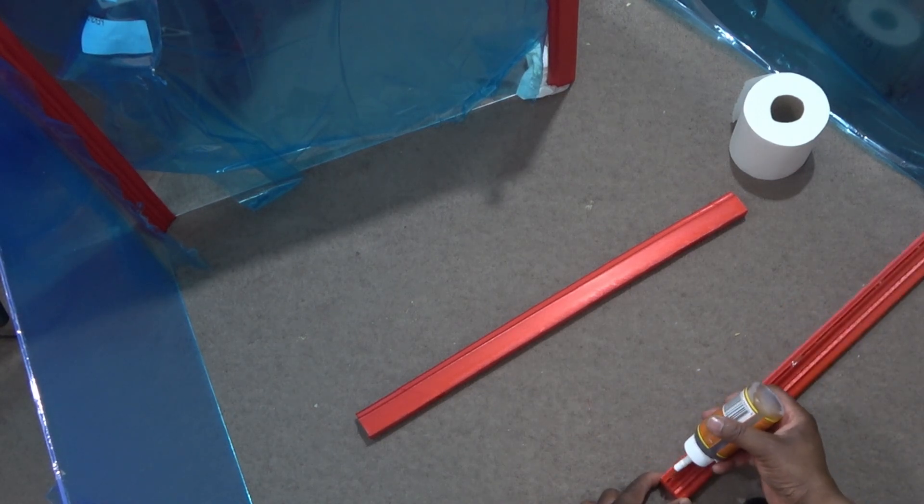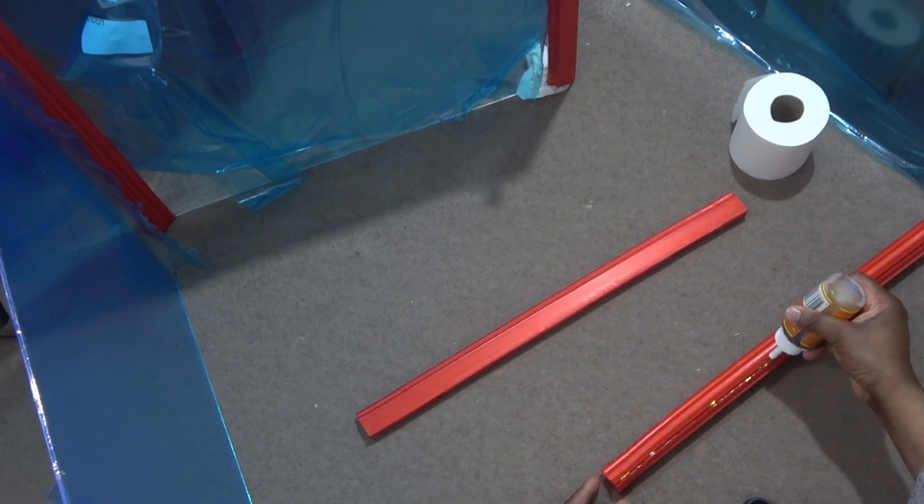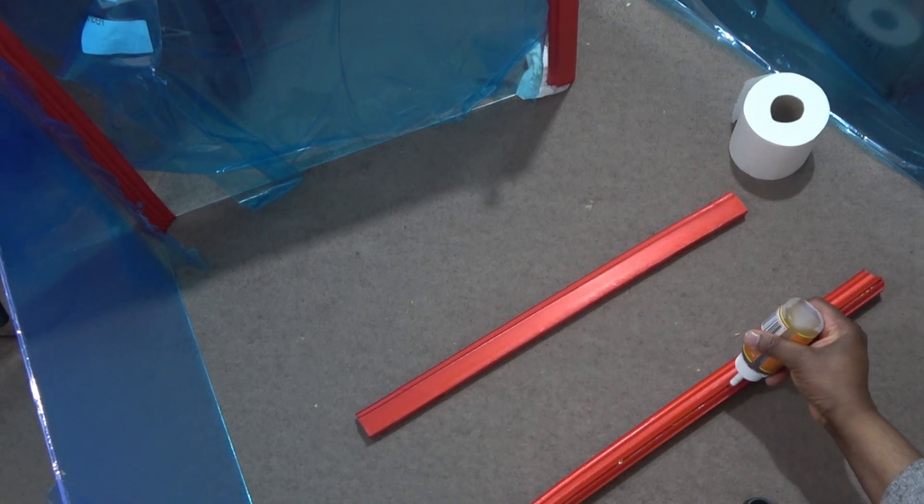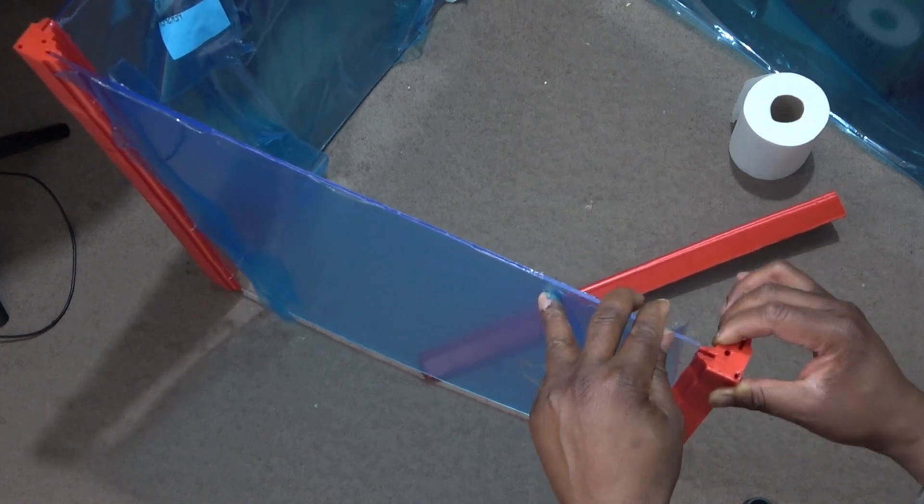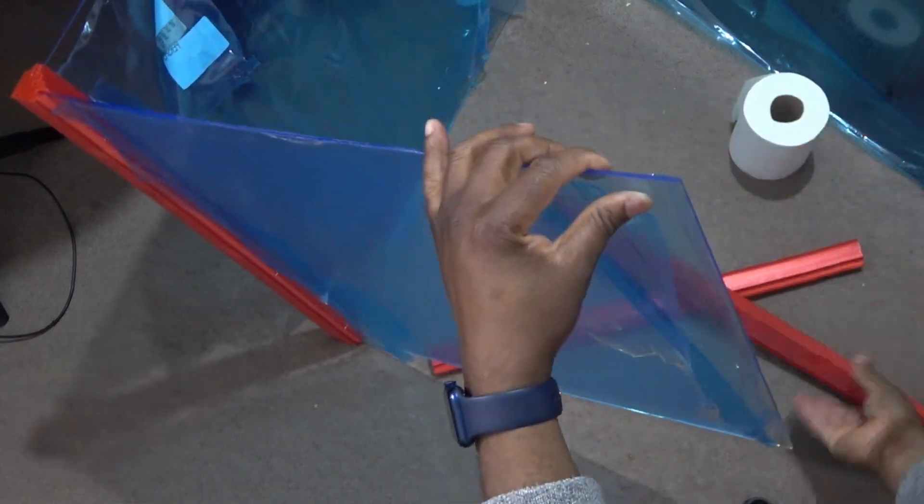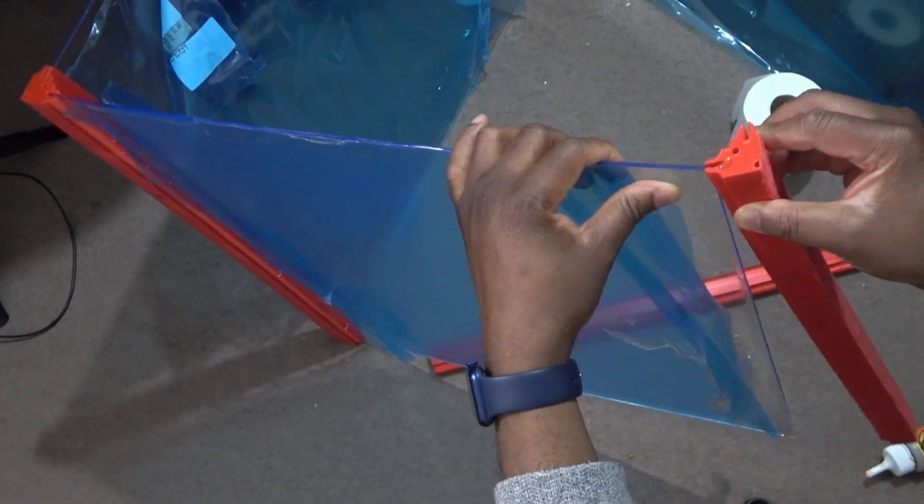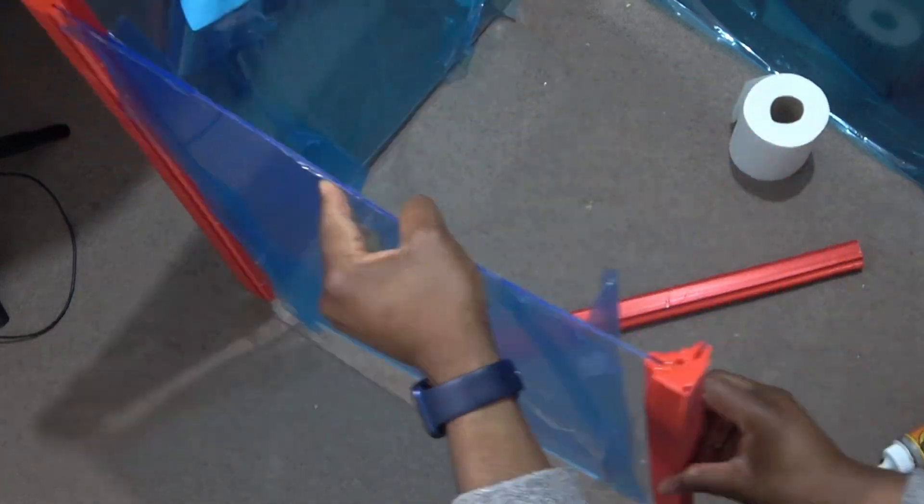You do not have to apply the glue to the entire length, as I realized later. But once the glass sits in, slide the frame up and down to distribute the glue relatively evenly. Please note that it is a relatively tight fit.